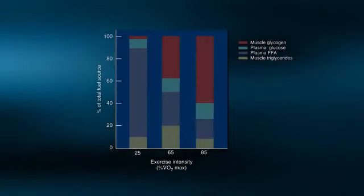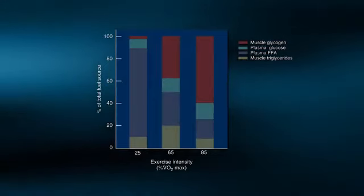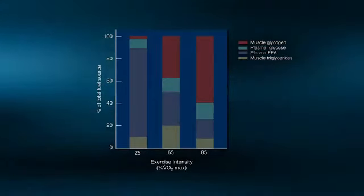When we take a closer look at exactly where the fuel is coming from, we see that early in the graded exercise test, at 25% of VO2 max,